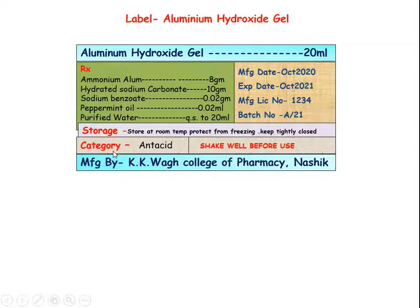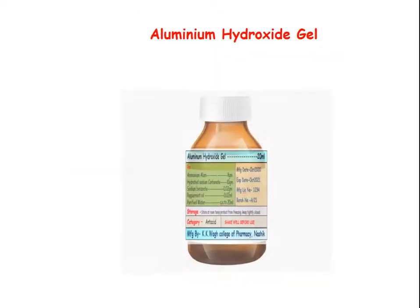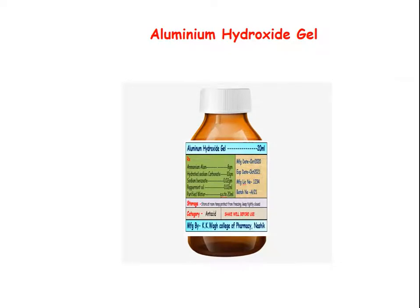The label should also mention the category — as it is used as an antacid, category is listed as antacid. Since it is a suspension, you must strictly mention 'Shake well before use.' Finally, mention the name of the manufacturing company or manufacturer. After sticking this label on the container, the formulation is ready to use.